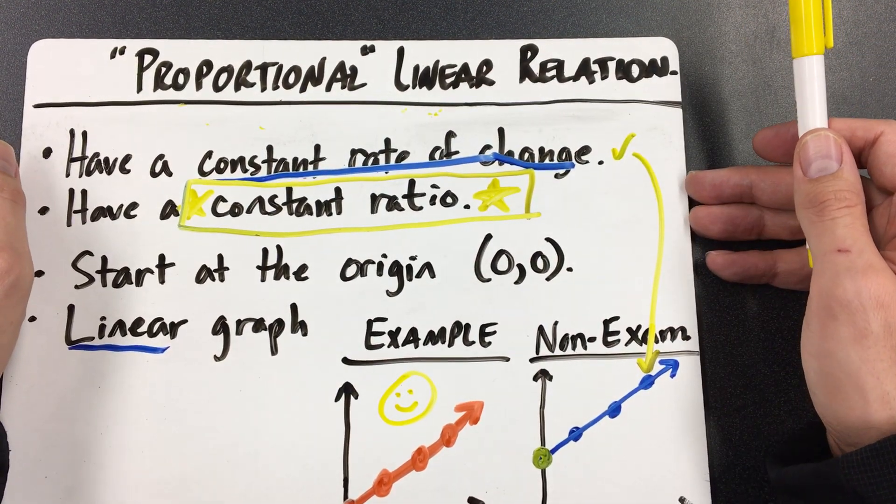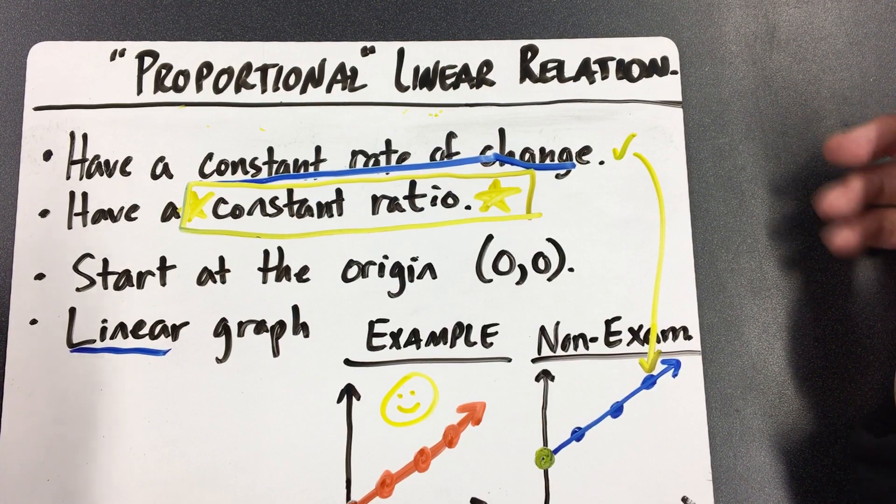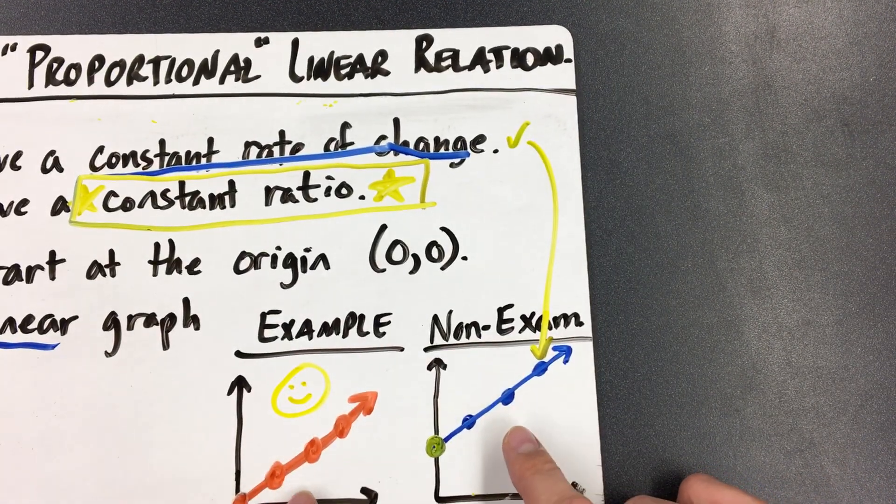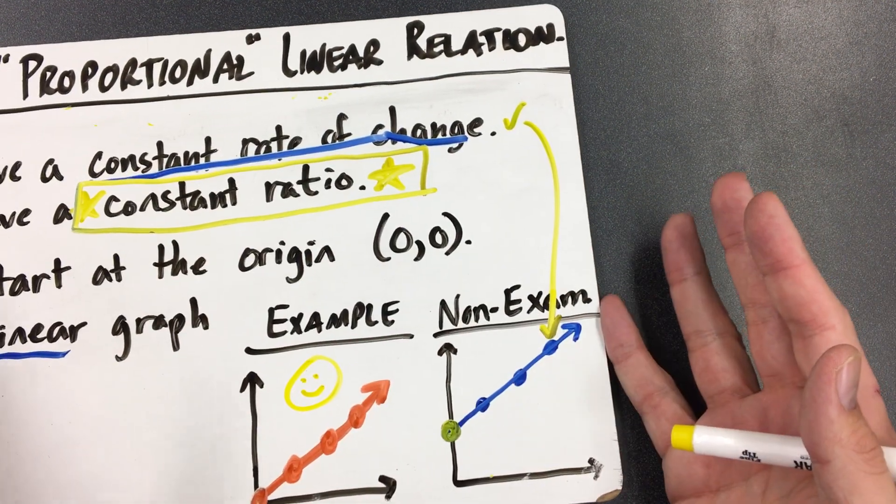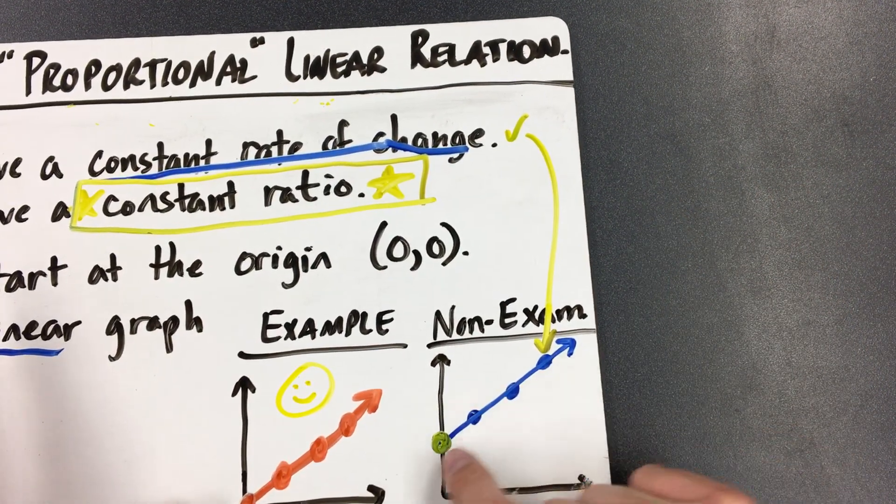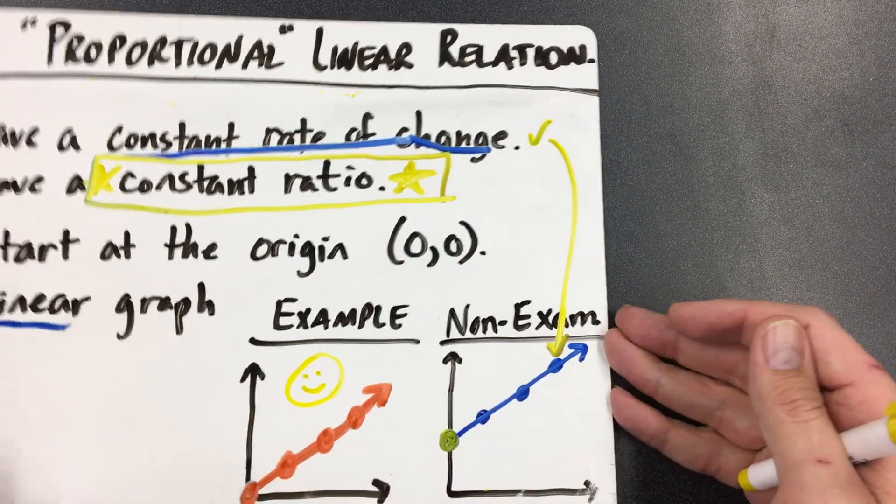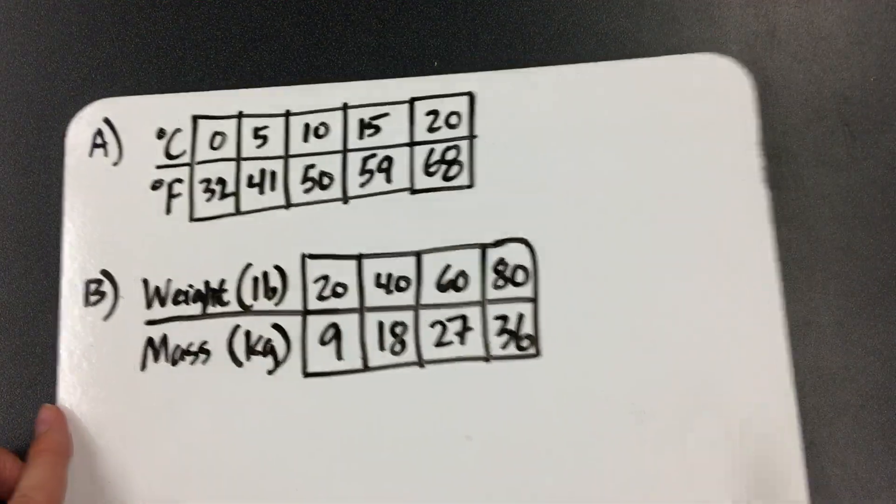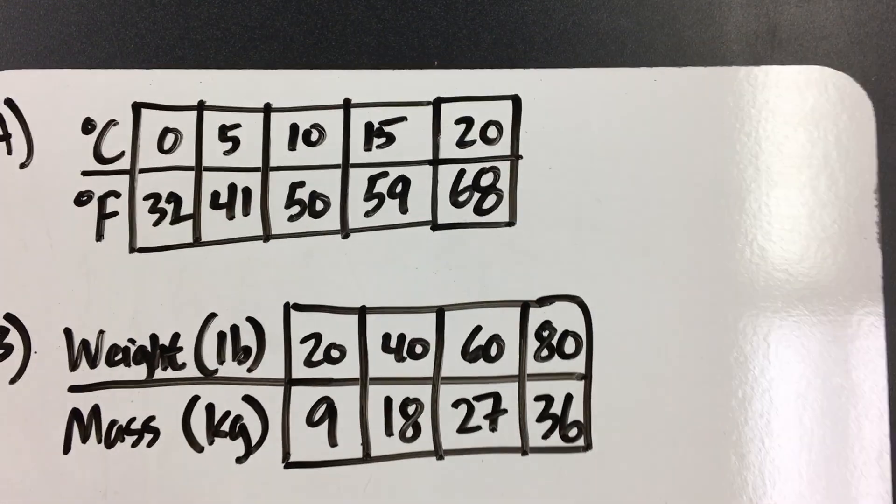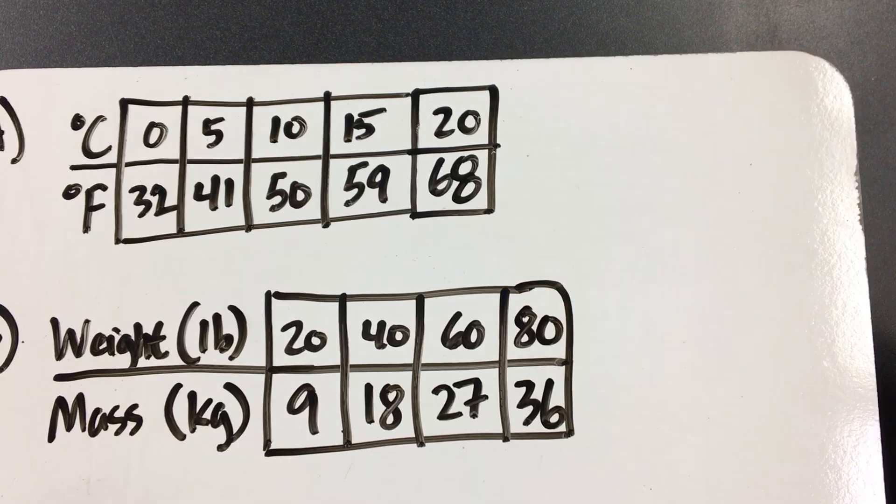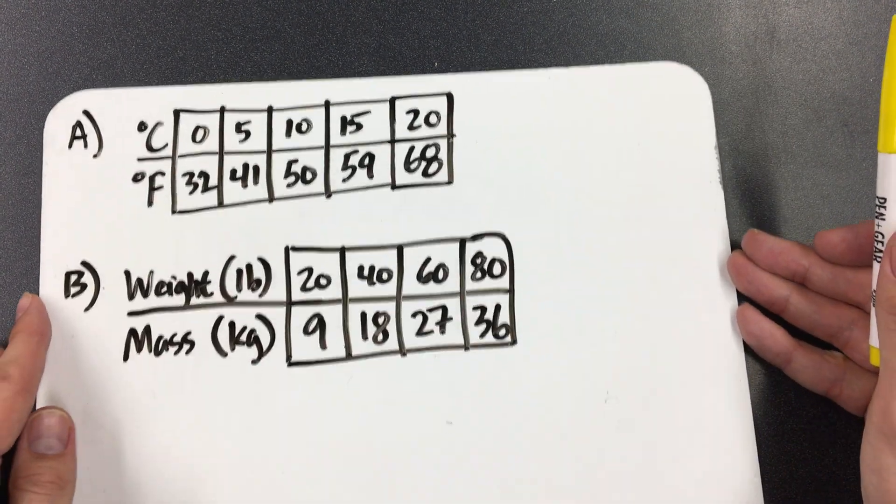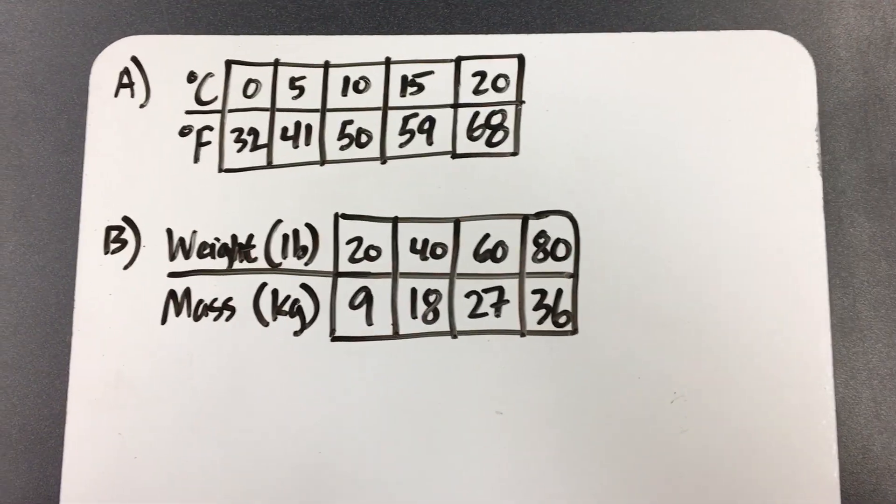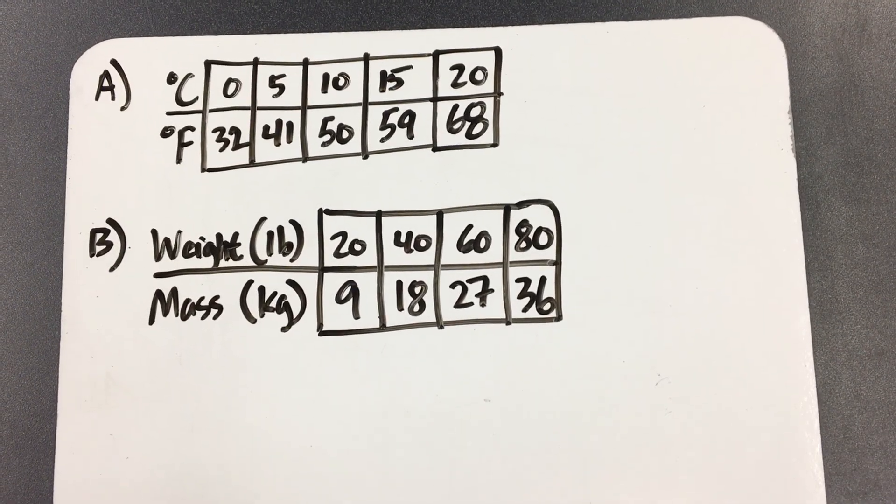Now, are you going to have to graph every single one of these? What if the numbers are really big? It's easy to tell if it's proportional or not by looking at a graph. Does it start at the origin? Does it go in a straight line? It is a straight line, but it doesn't start at the origin. So no, it's not a proportional graph. What do we do when it gives you something like this though? Do I want to make a graph that goes all the way up to 68 and 20 and 80? Nobody wants to do that, right? Here's what we can do instead.